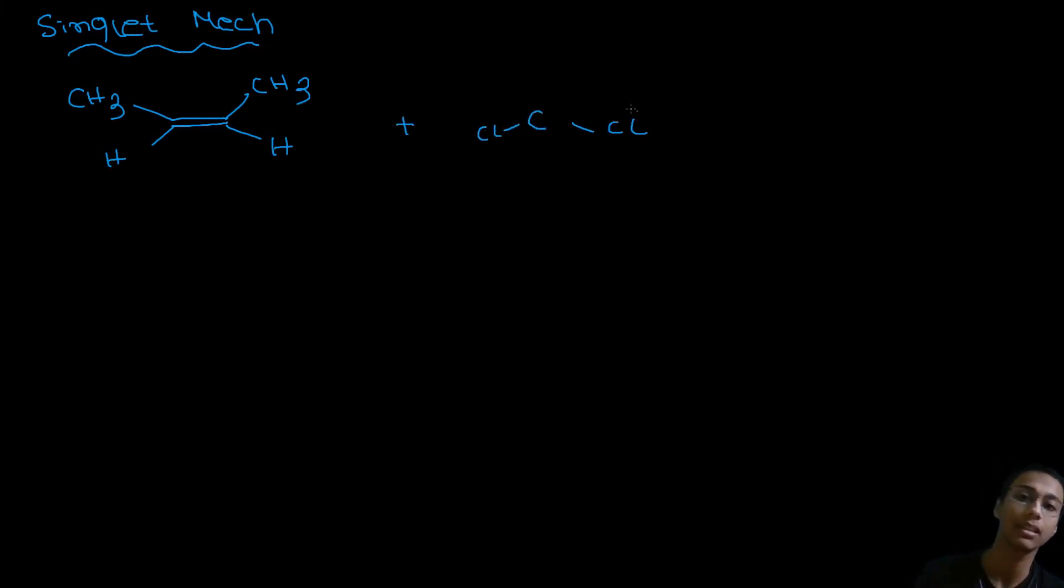First of all, let me show you the singlet mechanism. This is our alkene and this is our carbene with Cl Cl. Here we have up, down and here we have this. What happens is, this is an empty orbital, right? This makes it an electrophile, as I told in the first video.